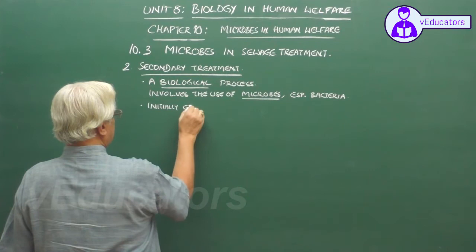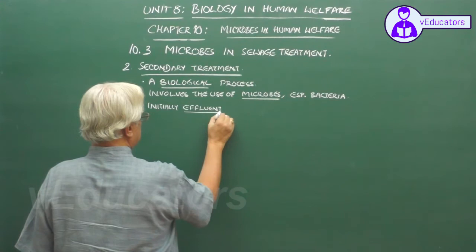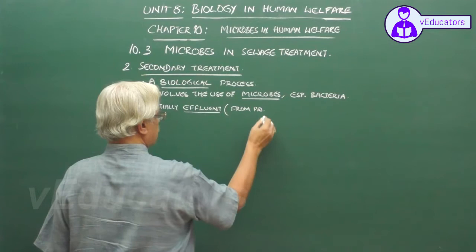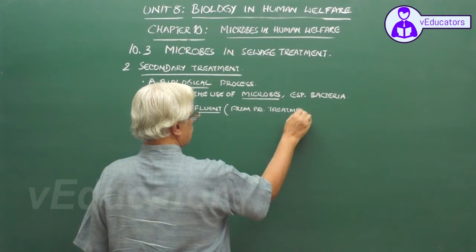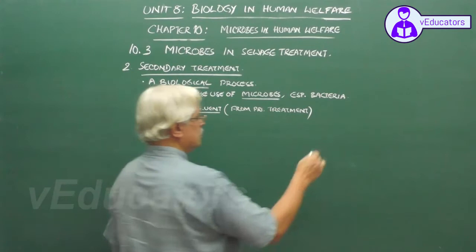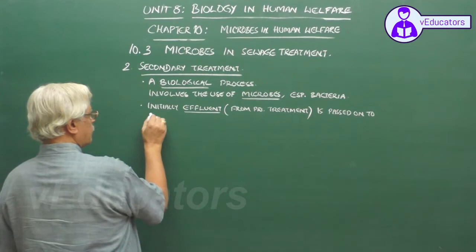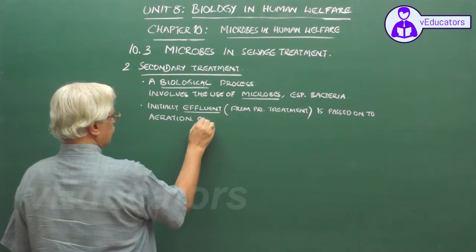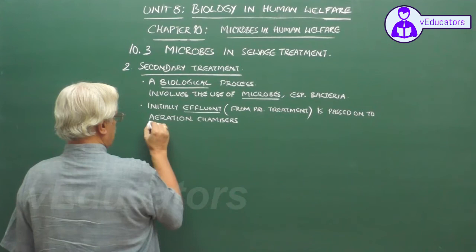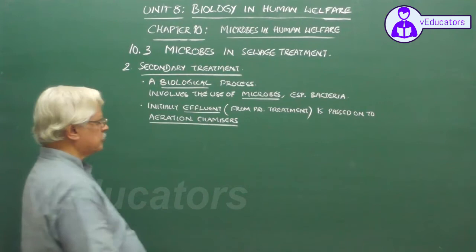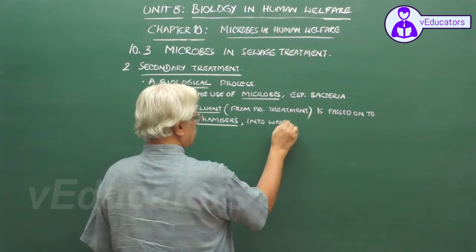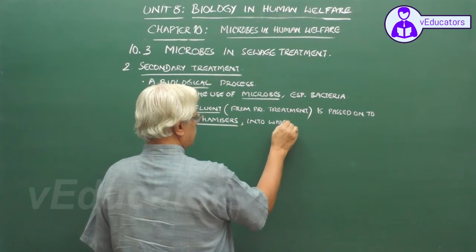In this process, effluent received from primary treatment is passed on to what are known as aeration chambers, into which air is passed.